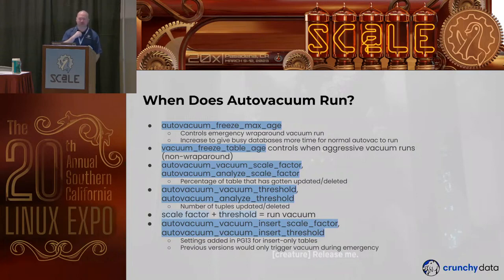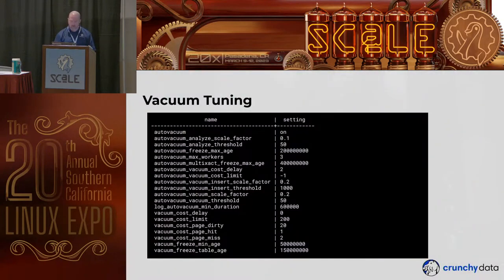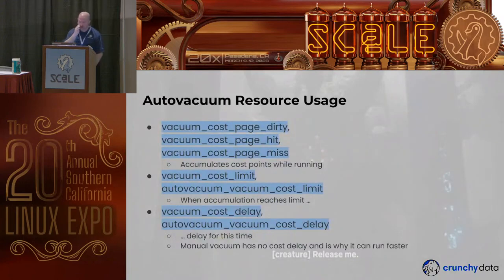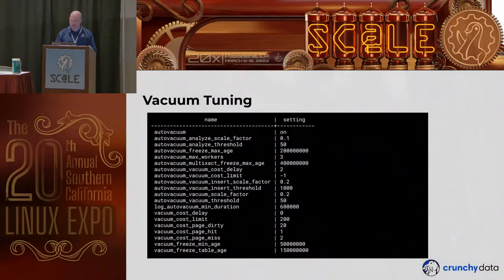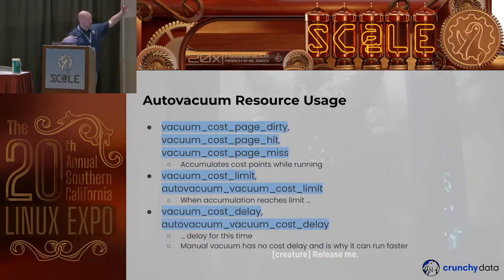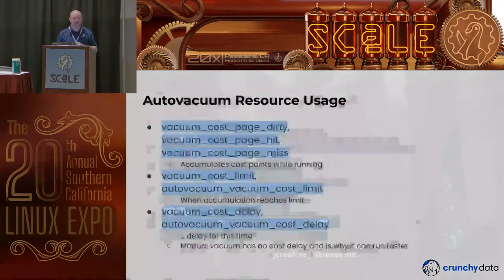Regarding cost delay tuning: there's vacuum_cost_delay, vacuum_cost_limit, vacuum_cost_page_dirty, vacuum_cost_page_hit, and vacuum_cost_page_miss. These are points accumulating while vacuum is running. The dirty page cost is the most expensive at about 20, page hit is 1, and page miss is 2. When these costs accumulate and hit the cost limit of 200, it triggers a cost delay — by default 2 milliseconds — then vacuum continues. This is why auto vacuum seems slower than a regular vacuum, because a regular vacuum has no cost limit. The Postgres 14 failsafe emergency vacuum at 1.6 billion also has no cost limit.